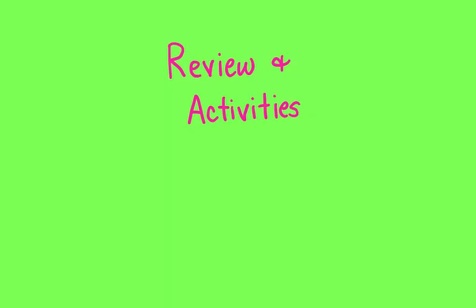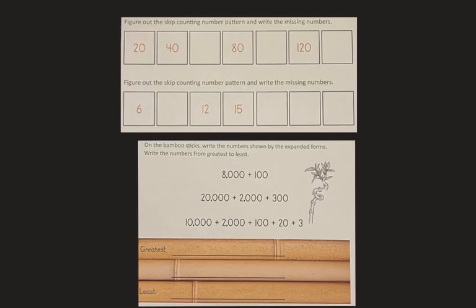Okay, we're here at our final part, the review and activities section. Remember this part I will read for you if you need help with reading. And you will need to fill in your answers and have your parent or teacher check it for you. So the first part says figure out the skip counting number pattern and write the missing numbers. So there's a pattern happening and you're going to fill in the missing numbers in that pattern. Same thing with this one.